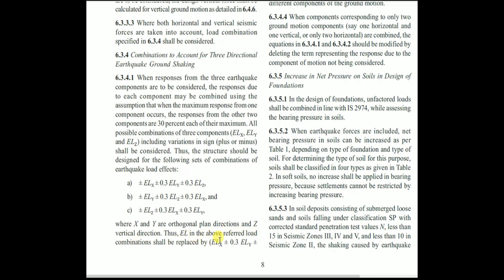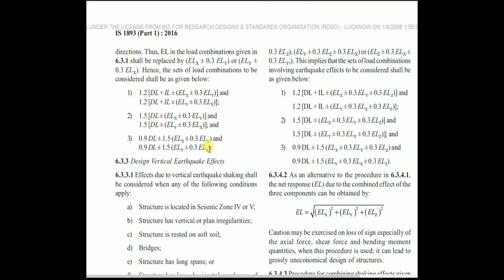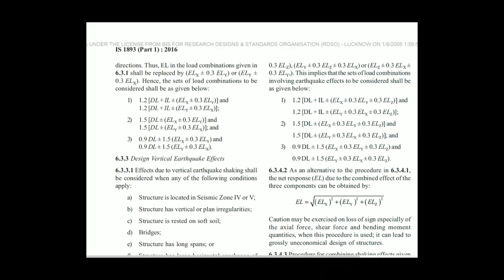In the full set of load combinations, the EL term is replaced by the three-directional expression. For example: Dead Load + Live Load ± ELx ± 0.3 ELy ± 0.3 ELz. We apply this replacement to all three sets of load combinations to account for vertical earthquake effects as well.